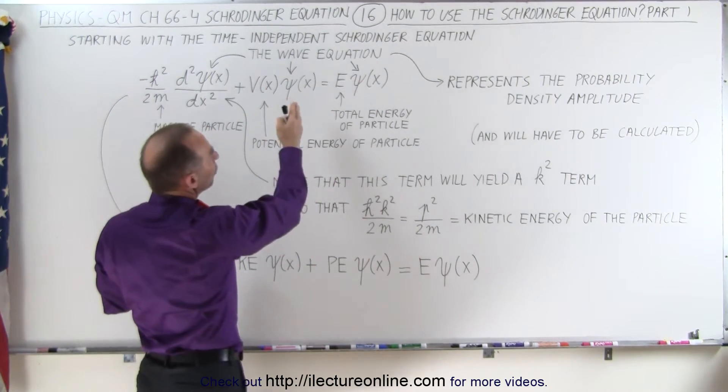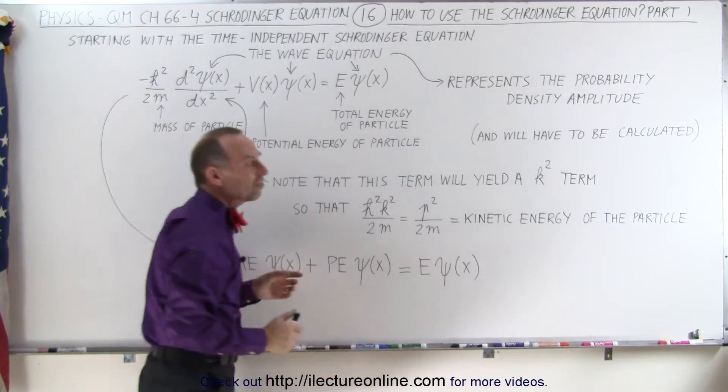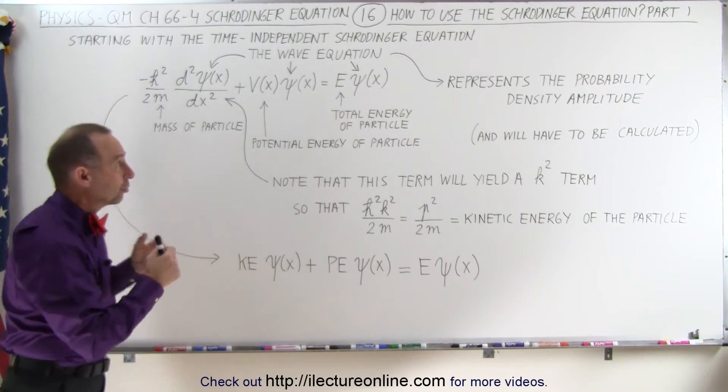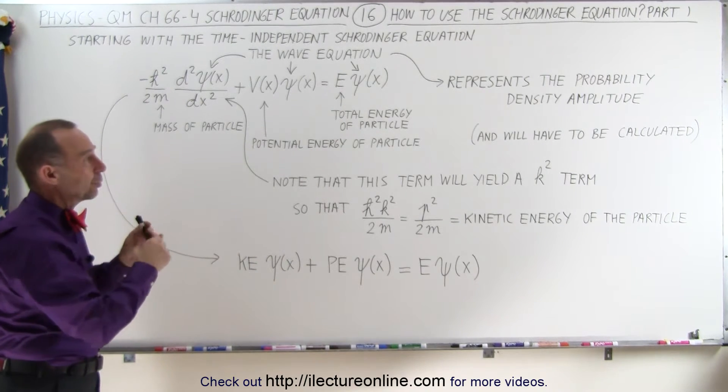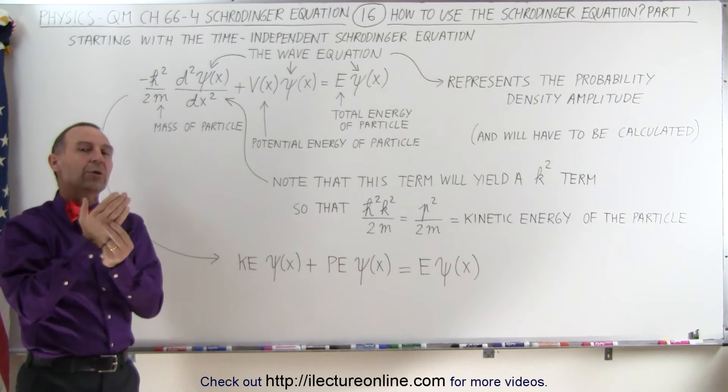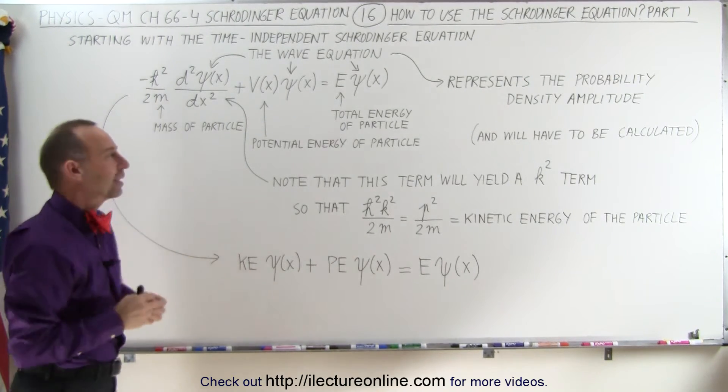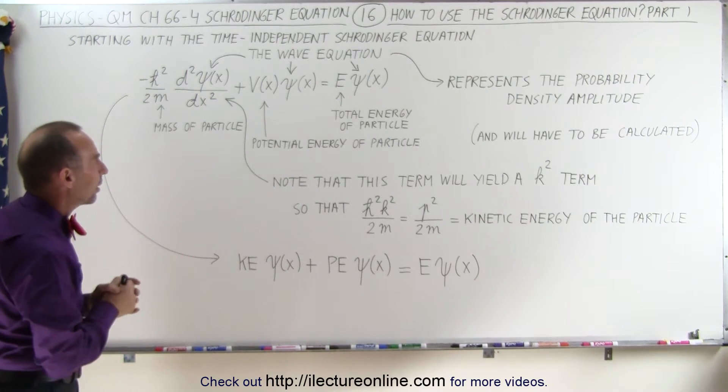Remember that the wave equation simply represents the probability density amplitude, not actually the probability equation. And so therefore we will have to manipulate it—we'll have to multiply the wave equation by the complex conjugate and then we have to normalize it to find the probability function of the particle.